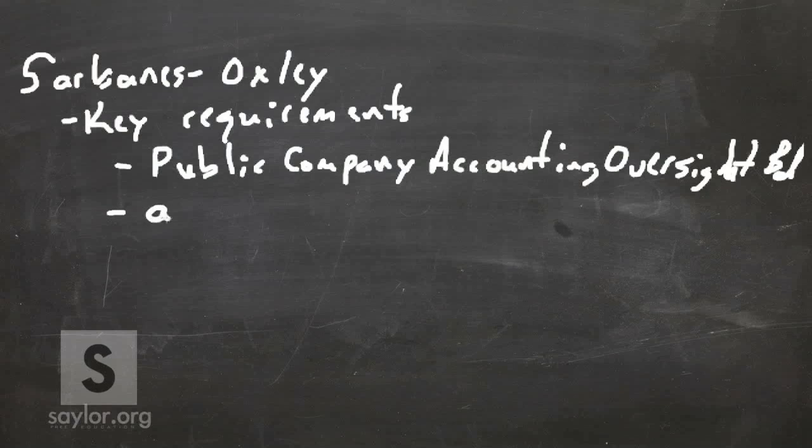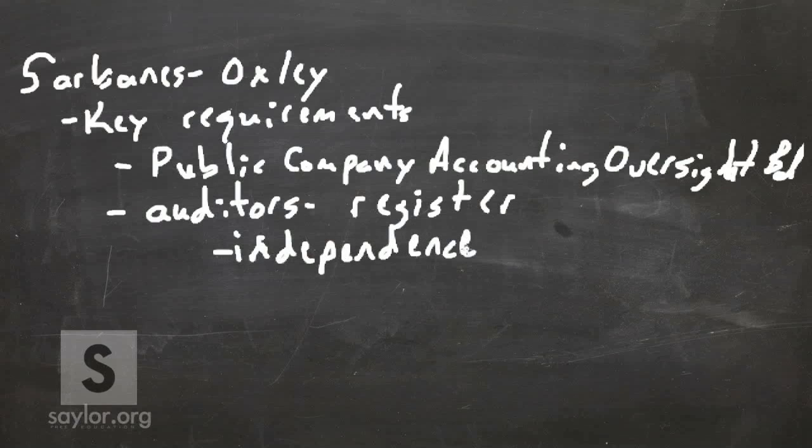Along with this, auditors of public companies must register with the Public Company Accounting Oversight Board, also known as the PCAOB. They're required to maintain independence. For instance, the company that audits, the outside auditors that come in, have to be independent from the rest of the company if there are any relationships with the public company. In other words, there can't be any conflicts of interest. The auditors must maintain independence and not get any types of benefits or payoffs that would influence them.